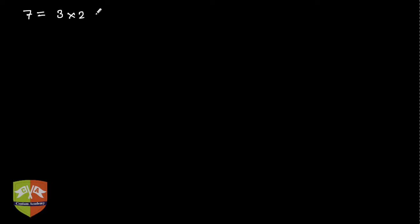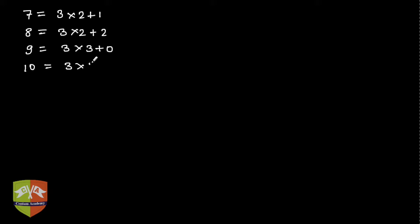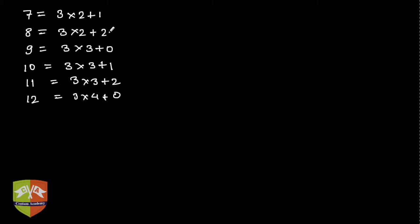Now we'll see how we can express any given integer in terms of multiples of 3. For example: 7 is 3 into 2 plus 1, 8 is 3 into 2 plus 2, 9 is 3 into 3 plus 0, 10 is 3 into 3 plus 1, 11 is 3 into 3 plus 2, and 12 is 3 into 4 plus 0. The remainders repeat: 1, 2, 0, 1, 2, 0.